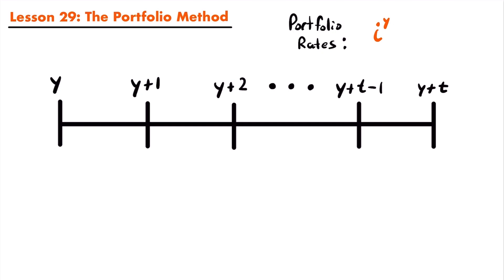Looking at a period of time with various different years: this first year would be Y, then we have the next year Y plus one, then Y plus two, all the way up until Y plus T minus one, and then Y plus T. This is just a set of years from Y to Y plus T. Each of these years in the portfolio method would be assigned a certain portfolio rate of i with a superscript of that year.